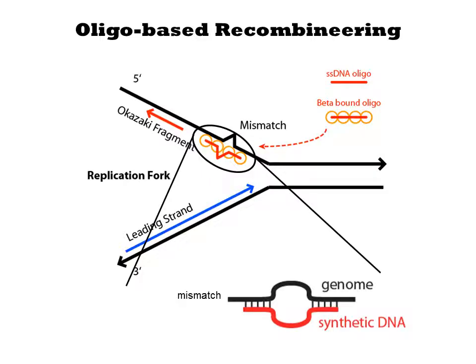In the E. coli MAGE experiment, you start with a strain engineered with the lambda-red genes from the phage and a mutation to the mutS gene. One of the reasons people like to work with E. coli is that it does homologous recombination inefficiently, so introducing DNAs are thus very stable in the organism. When you add the lambda-red genes, this functionality is provided and homologous recombination becomes highly efficient. The mutS knockout prevents the repair of mismatches in the genome, thereby increasing the efficiency of the process.